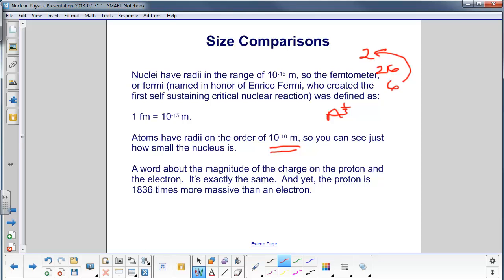However, as small as a nucleus is, and how large the individual protons and neutrons are, the cool thing is a charge on a proton is exactly the same as an electron, and yet the proton is 1,836 times more massive than an electron, yet the charge is the same.